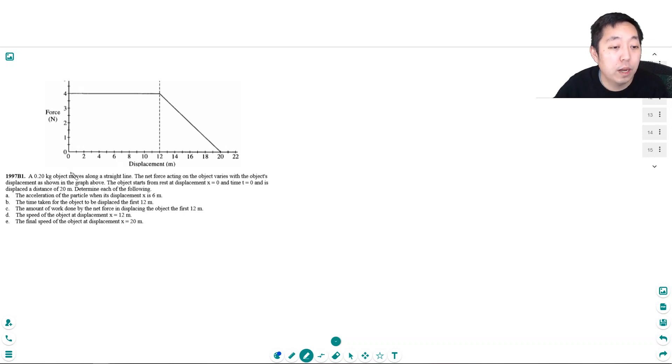A 0.2 kilogram object moves along a straight line. The net force acting on the object varies with the object's displacement as shown on the graph above. The object starts from rest at displacement x equals zero and time t equals zero and is displaced a distance of 20 meters. Determine each of the following. The acceleration of the particle at displacement x equals 6 centimeters.